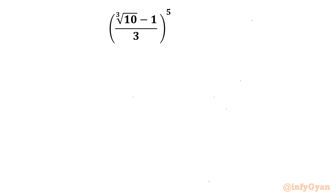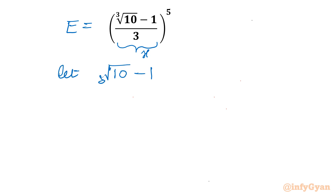Welcome to Infigyan friends. Today in this video we are going to take up another challenging question from algebraic simplification. The given expression is cube root of (10 minus 1 over 3) whole power 5. Let's consider the given expression as E, and use the substitution: this bracket equal to x. So we are going to evaluate x power 5. This is our target.